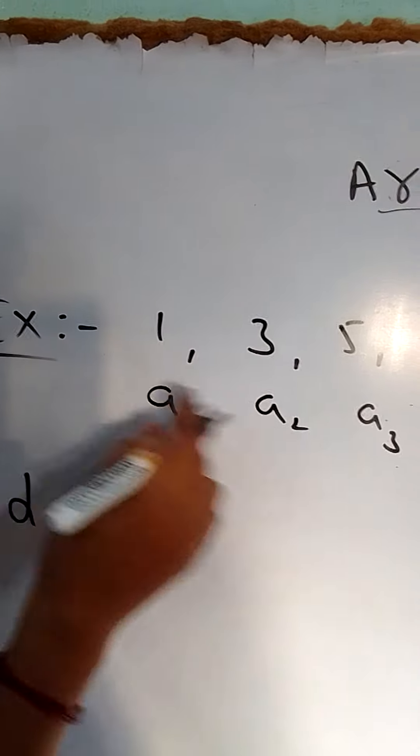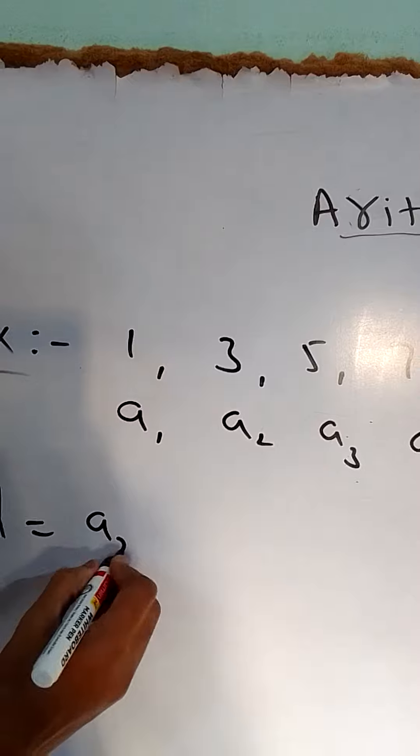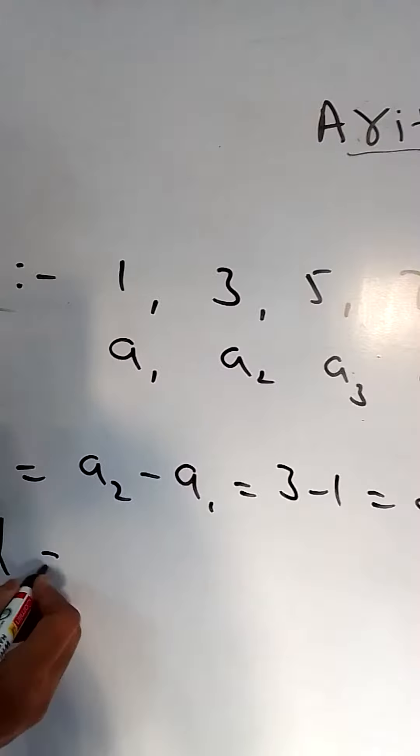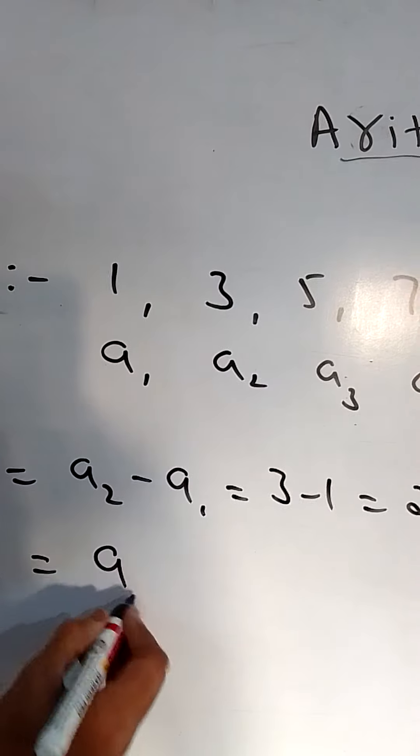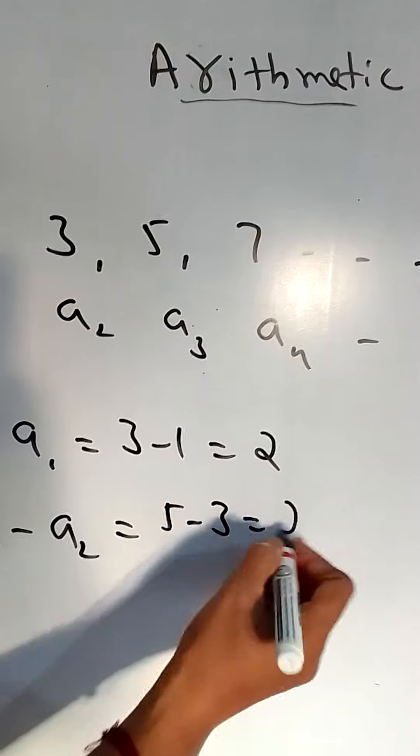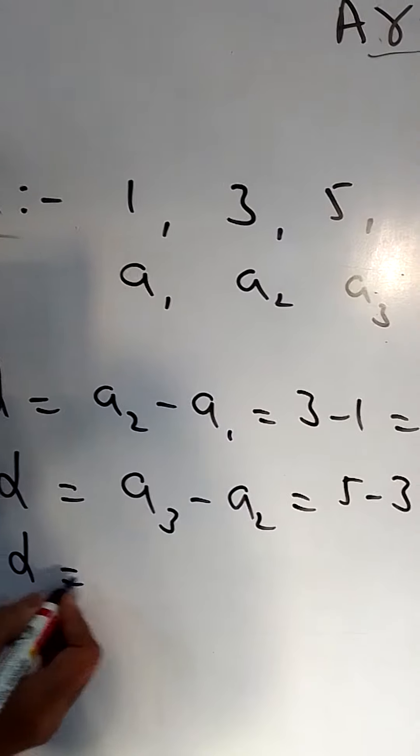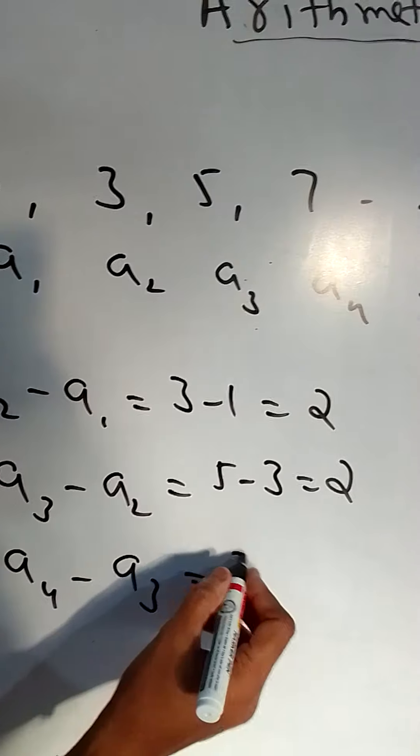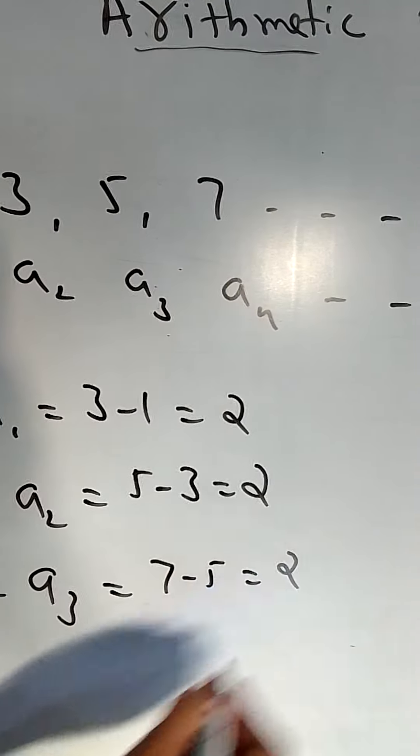D equals a₂ minus a₁, that is 3 minus 1, which equals 2. D equals a₃ minus a₂, that is 5 minus 3, which equals 2. D equals a₄ minus a₃, that is 7 minus 5, which equals 2.